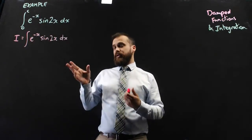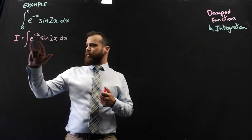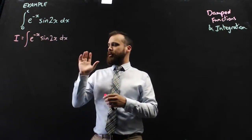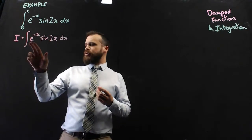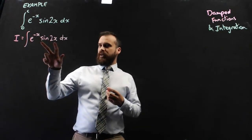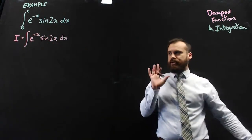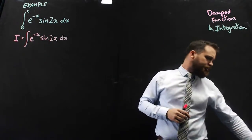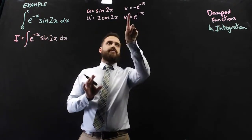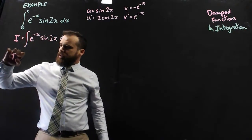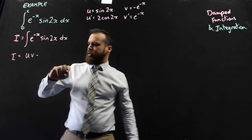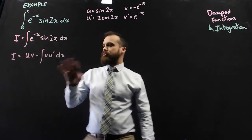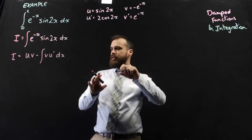We've got a function here multiplied by another function, so it looks pretty ripe for integration by parts. We'll make sine 2x our u and e to the negative x our v dash — that's going to work out much nicer. So there's my working: u, u dash, v, v dash. The integration by parts formula says the integral equals uv minus the integral of v u dash with respect to x.